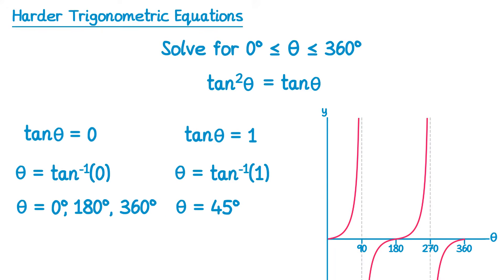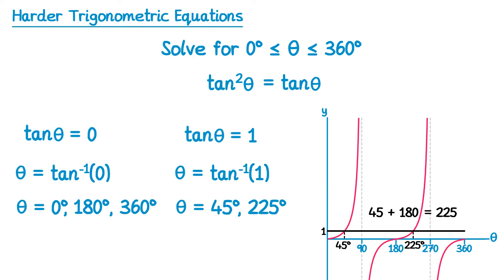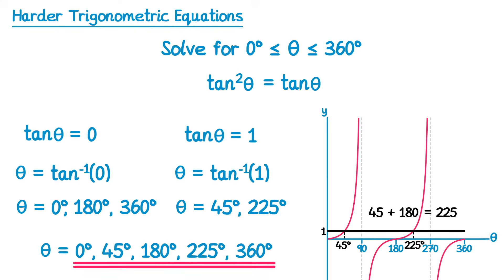For tan theta equals 1, we draw a horizontal line at 1 and see two solutions. One we already have — 45 degrees — and for tan graphs we add 180 to get the second: 45 plus 180 gives 225 degrees. So altogether there are five solutions: theta equals 0, 45, 180, 225, or 360 degrees.